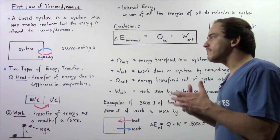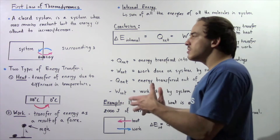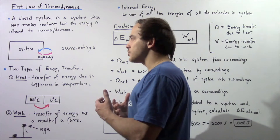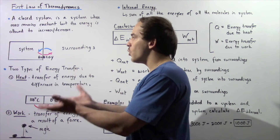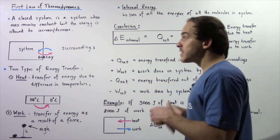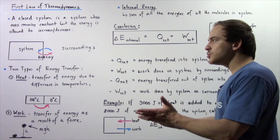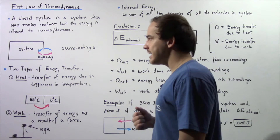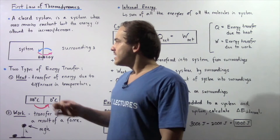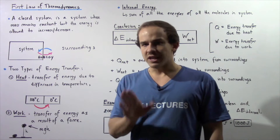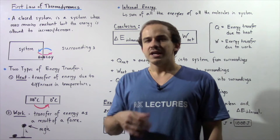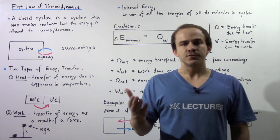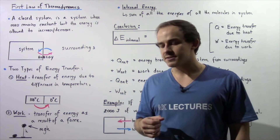Let's try to devise the relationship between the flow of energy — between the flow in and the flow out. This relationship is known as the first law of thermodynamics. Before we derive this relationship, let's discuss the types of energy transfers that are possible.